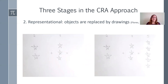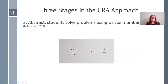Once the student has practiced at the representational level, we move on to stage three: the abstract stage. Here we use problems with written numbers only. We just have the basic math problem that we looked at with those other two ways. But once we've shown it in those two ways, now we can look at it as just the numbers.